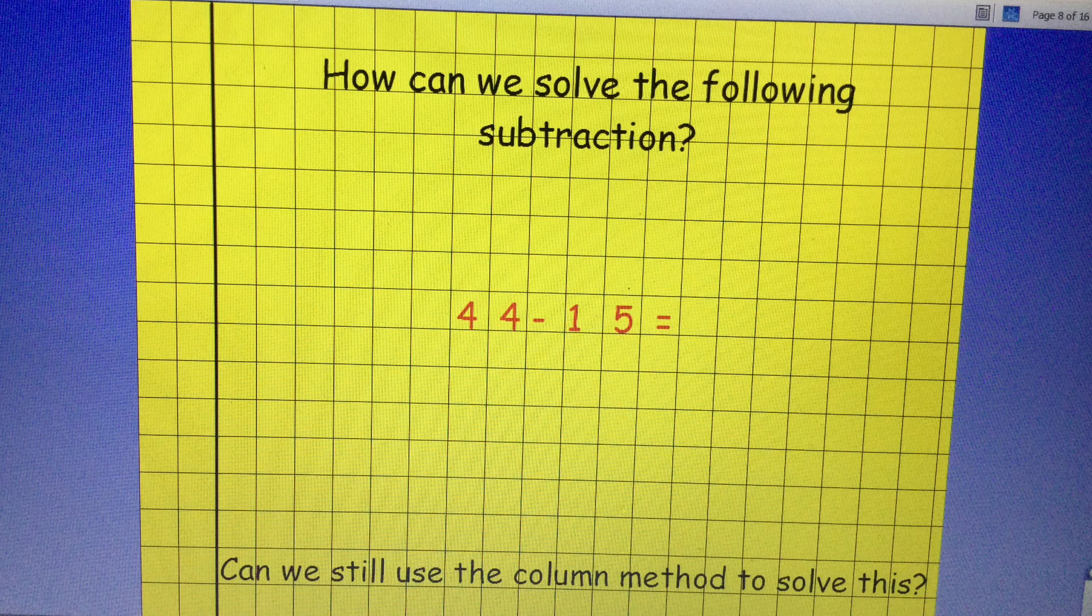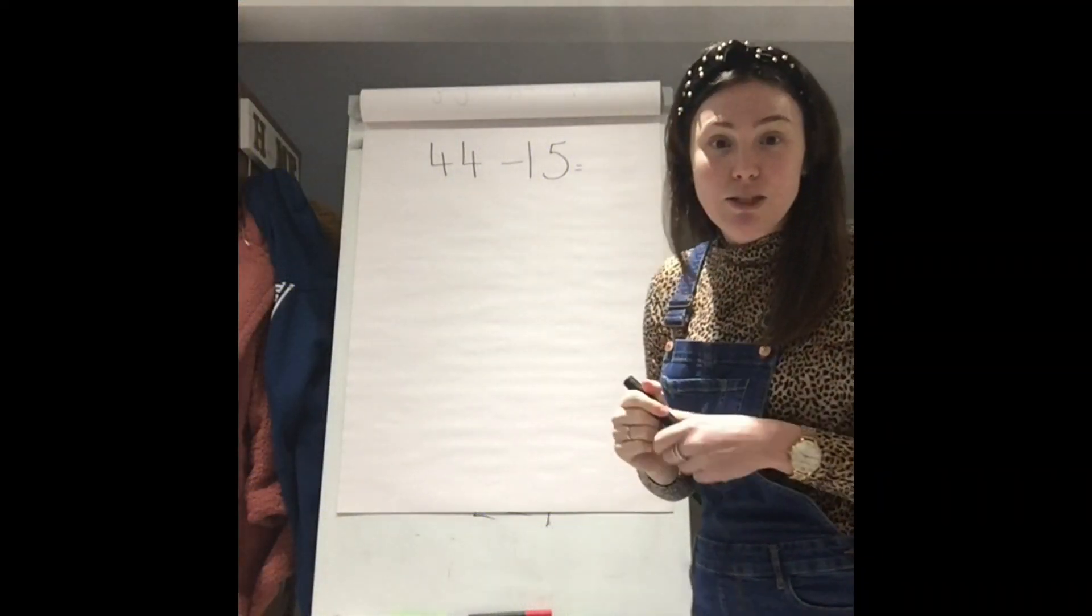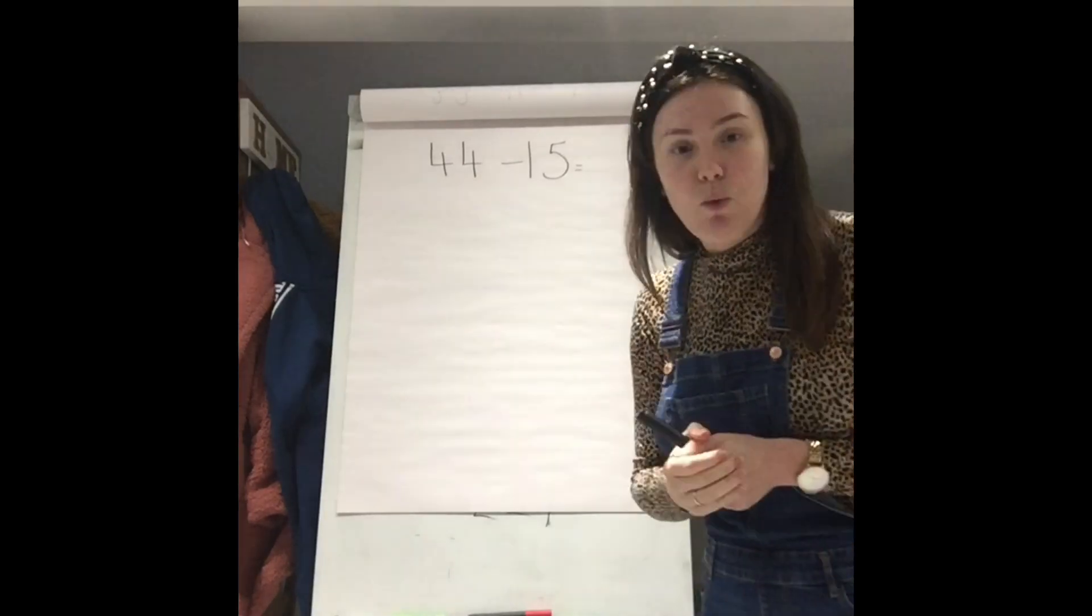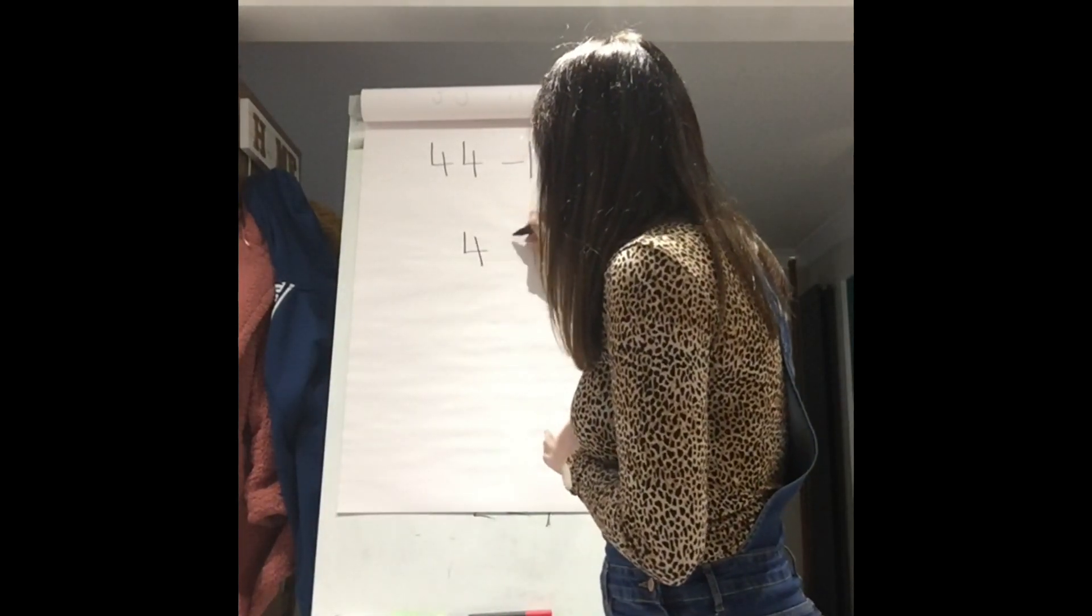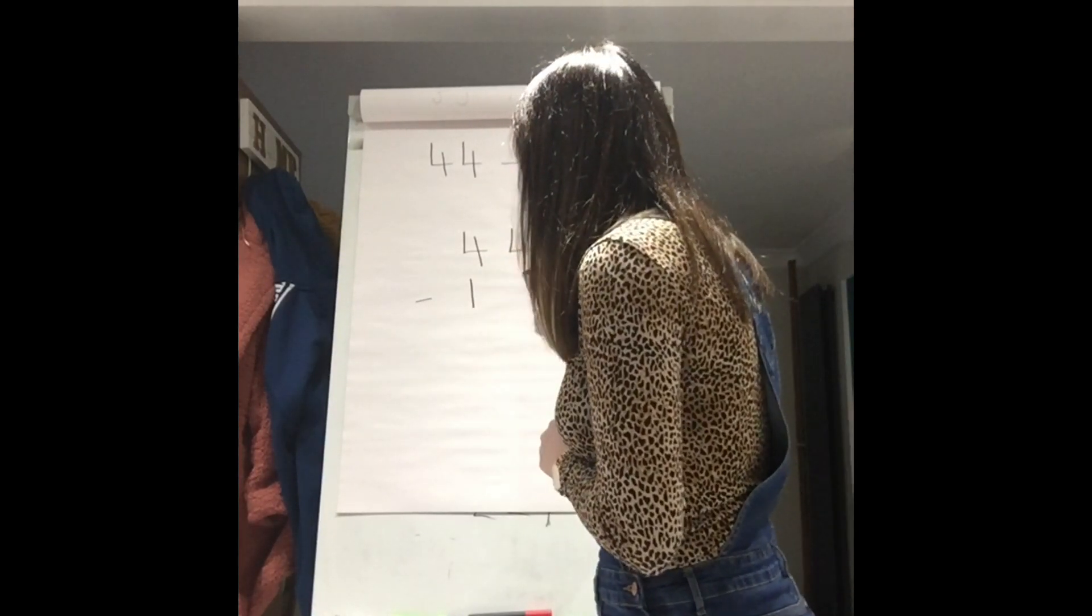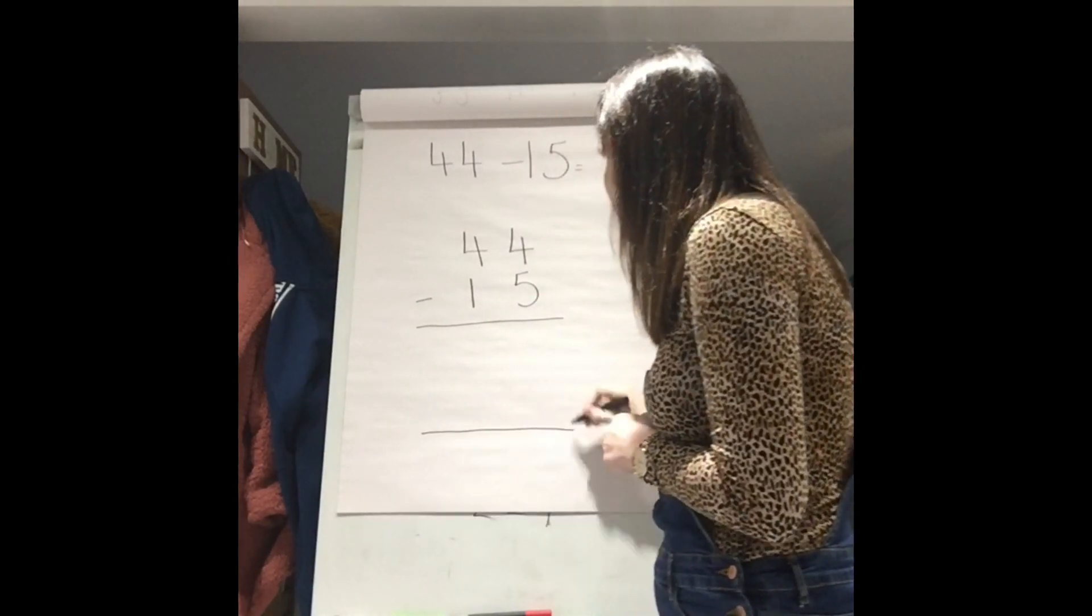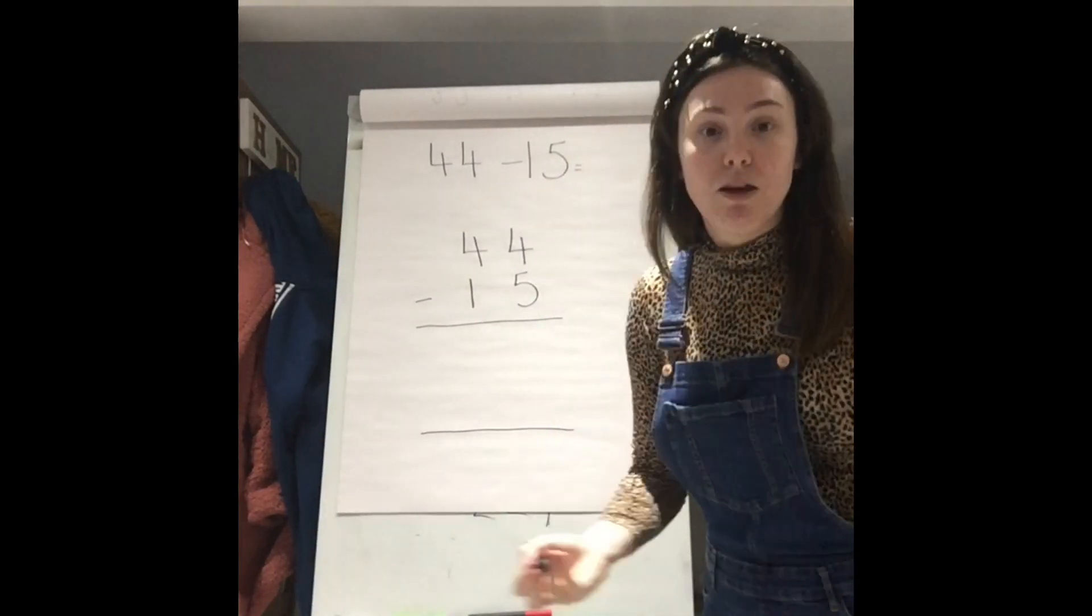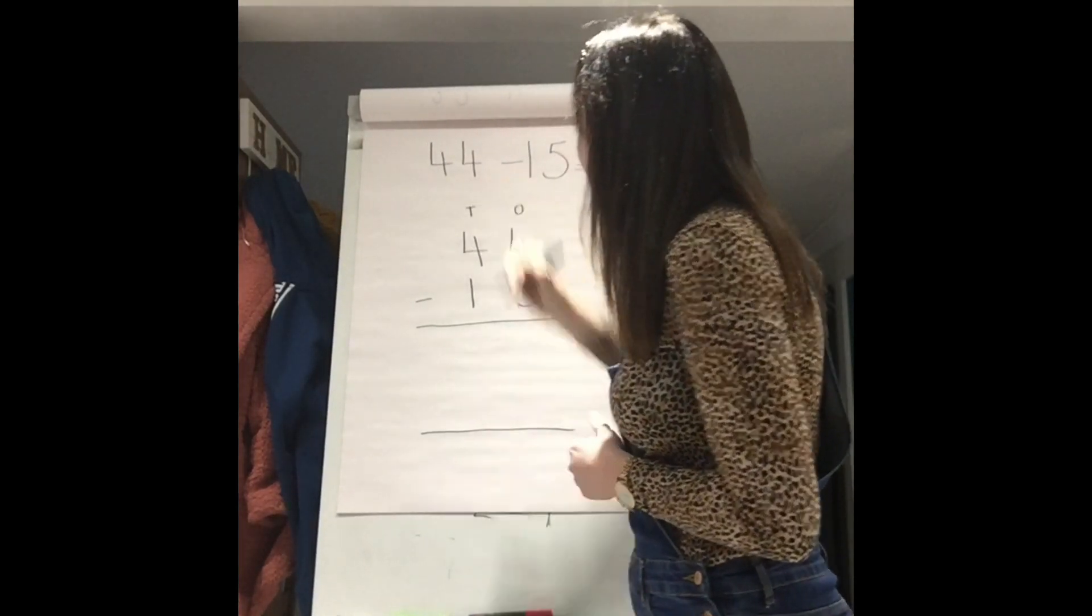We're going to have a go at this one together now. So, grab yourself another piece of paper and a pencil and follow along with me. OK, guys. Our next calculation we're going to do together is 44 take away 15. So, let's lay it out nice and neatly. 44 take away 15. I need some space for my working out and a space for my answer. And I'm going to label my 1s column and my 10s column like so.